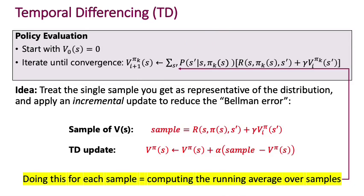That's an example of what temporal differencing is — it treats every single sample you encounter as representative of the distribution. Therefore you don't have to wait for a large number of environment interactions to improve your policy evaluation. Instead, you learn from every single step, from every single action emitted into the environment and the feedback you receive. You are learning much more quickly because you're making use of every single interaction to update your value function. Up until now we've seen temporal differencing applied to policy evaluation; next we'll see how to apply it to learning the optimal Q function.